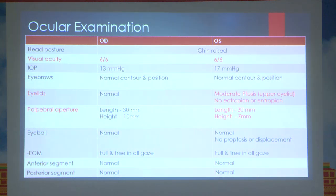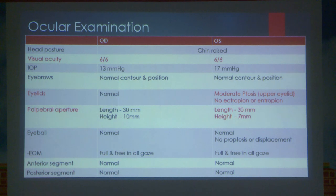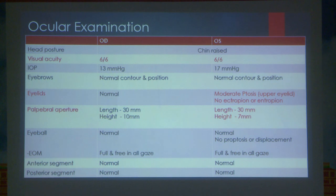Visual acuity was 6/6. Eyebrows were normal. There was moderate ptosis on the left side with no ectropion or entropion; palpebral aperture height on the left side was 7 mm. No restriction in eyeball movement, no proptosis or globe displacement. Anterior segment examination with pupils was within normal limits. Fundus examination was within normal limits.